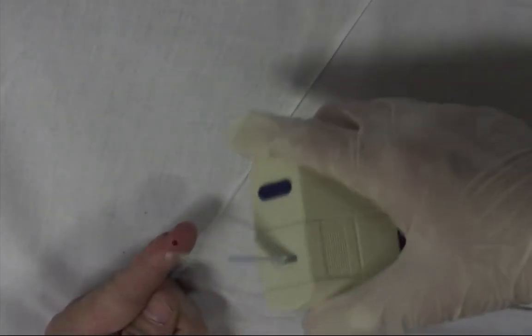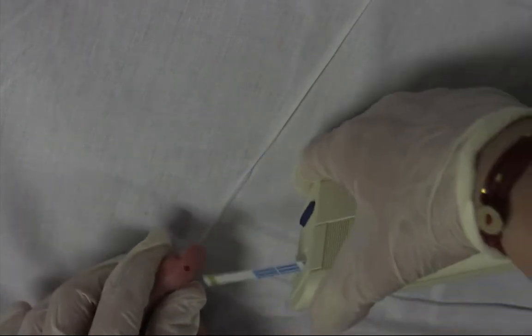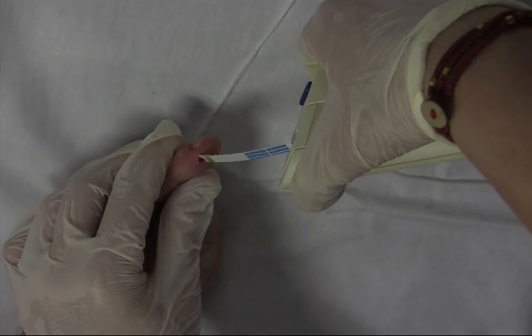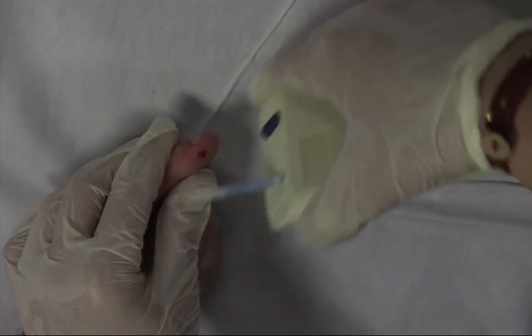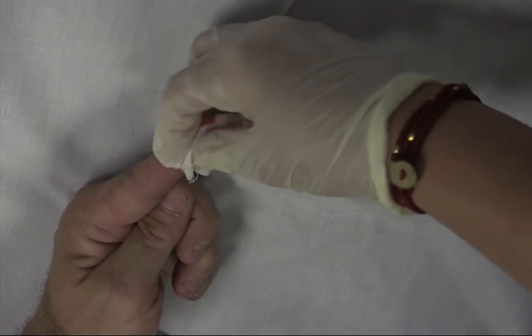Once the strip is inserted in the machine, a drop of blood is placed on the strip, and the glucometer will read your patient's blood sugar.